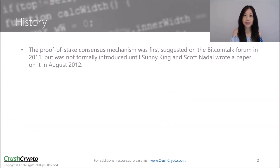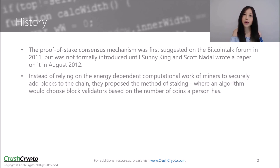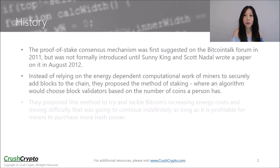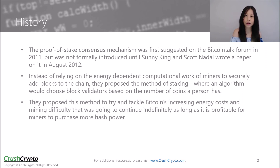The Proof of Stake consensus mechanism was first suggested in an online forum in 2011, but it was not formally introduced until a paper was published on it in 2012. Instead of relying on the energy-dependent computational work of miners to securely add blocks to the chain, the authors of the paper proposed the method of staking, where an algorithm would choose block validators based on the number of coins a person has. They proposed this method to try and tackle Bitcoin's increasing energy costs and mining difficulty that was going to continue indefinitely as long as it was profitable for miners to purchase more hash power.